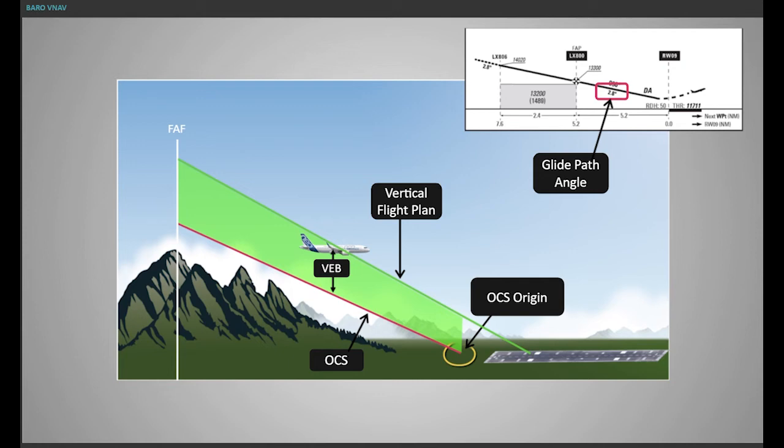RNP AR procedure design criteria must suitably consider the vertical error budget. Note, as a general guideline, the vertical error budget normally results in an obstacle clearance of about 355 feet.